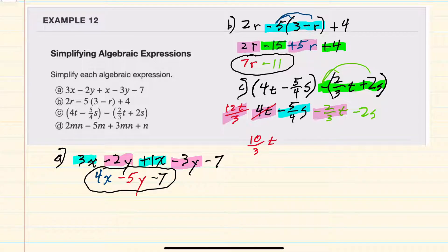Then for the s terms, they also need a common denominator. So here I'll rewrite the minus 2s as a minus 8s over 4 to get a common denominator. Now I can combine negative 5 fourths minus 8 fourths would be a negative 13 fourths s. So c has been fully simplified.